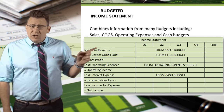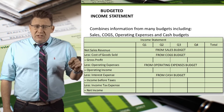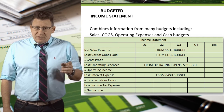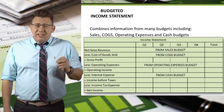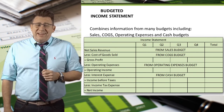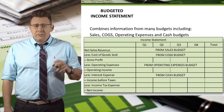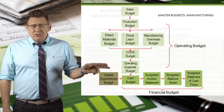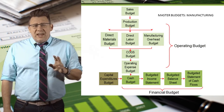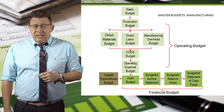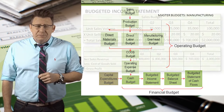As you can see here, we'll use data from the Sales Budget, the Cost of Goods Sold Budget, the Operating Expenses Budget, and the Cash Budget. The Budgeted Income Statement is the tenth budget completed in the master budget process.